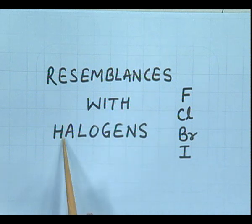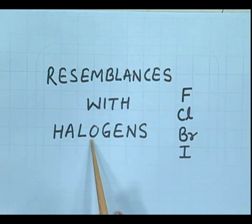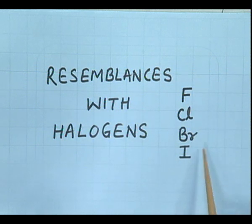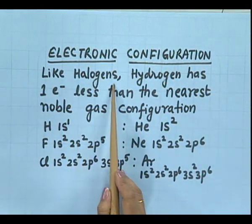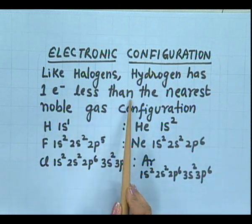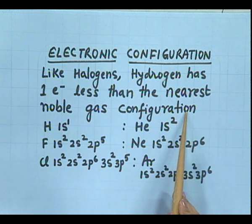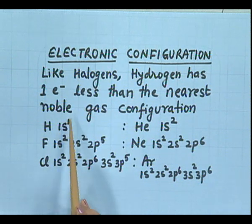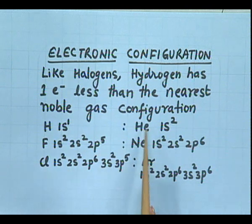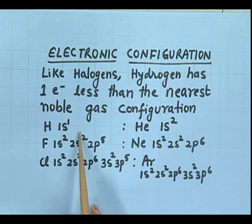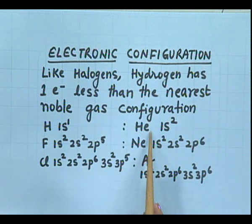Now we will see how hydrogen resembles halogens. Halogens are the 17th group elements — fluorine, chlorine, bromine and iodine. Electronic configuration: like halogens, hydrogen has one electron less than the nearest noble gas configuration. Hydrogen's electronic configuration is 1s1, and its nearest noble gas helium has configuration 1s2 — so hydrogen is just one electron less. Fluorine's electronic configuration is 1s2, 2s2, 2p5, and its nearest noble gas neon has 1s2, 2s2, 2p6 — fluorine is just one electron less than neon. Similarly, chlorine is also one electron less than argon, the nearest noble gas.